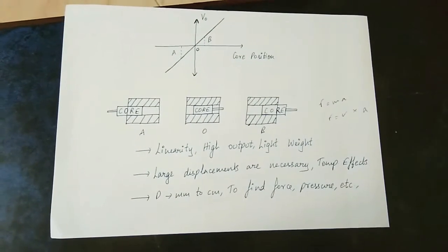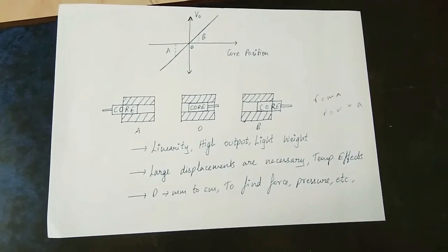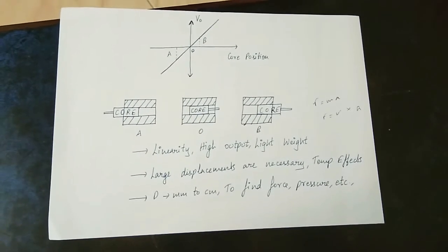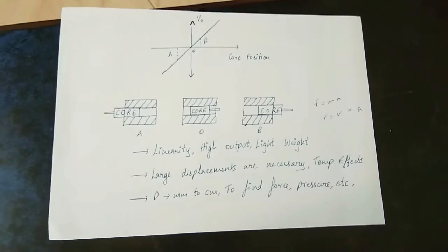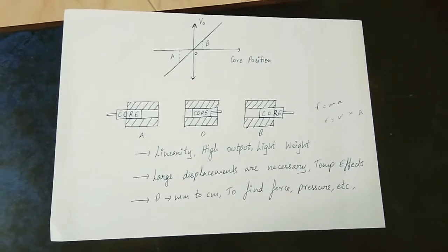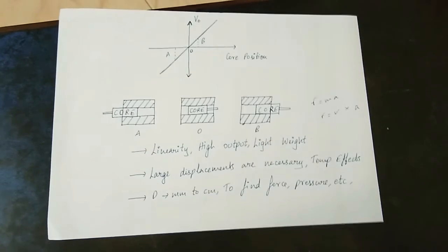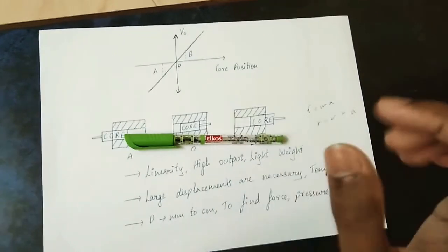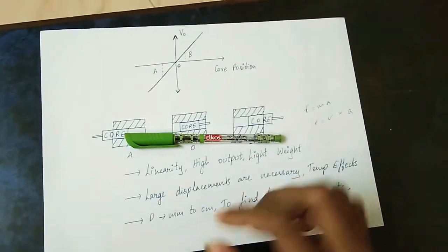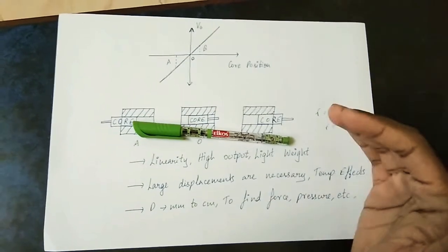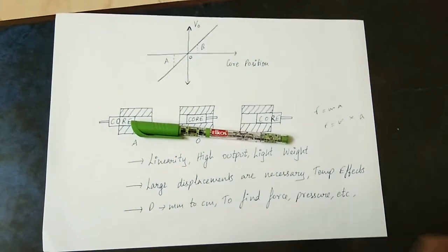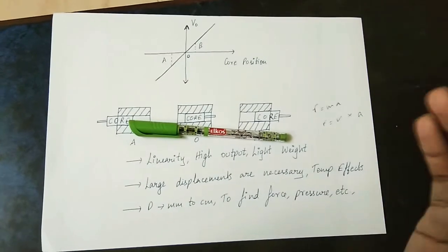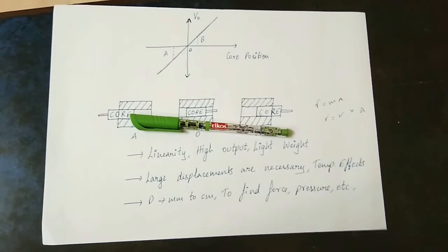If you have a question about this: the core position determines the output voltage on the left side or right side. The force on the right side moves the core to the right. This is converting a physical quantity into an electrical quantity.